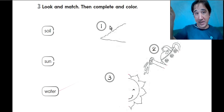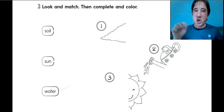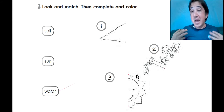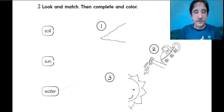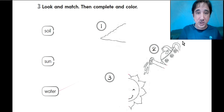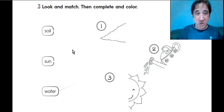You're going to look, match, then complete and color, okay? I'm not going to color, but you color. Deal? So the first thing, we're going to look and match. We have here the word soil, the word sun, and the word water. So we're going to match with the pictures.